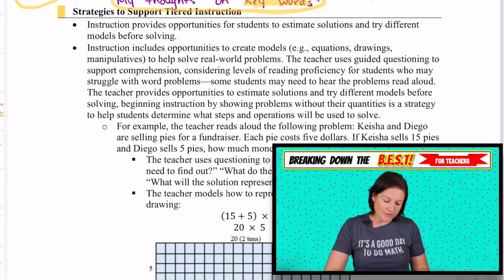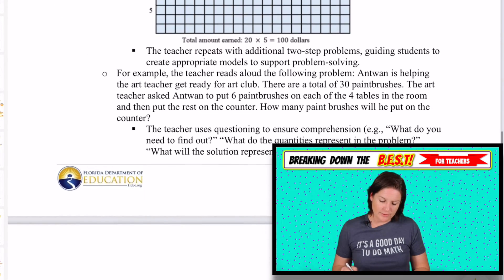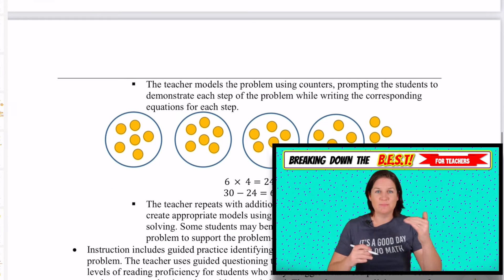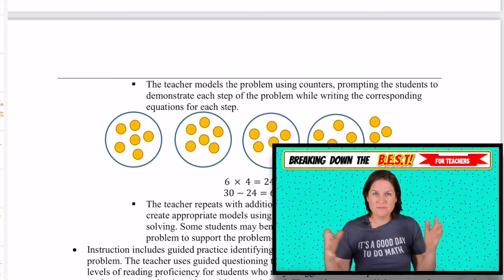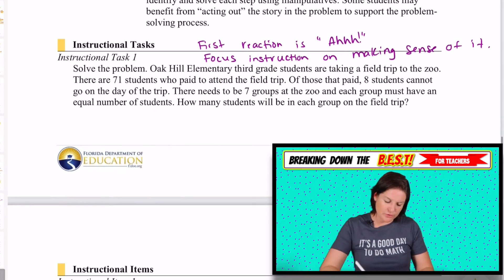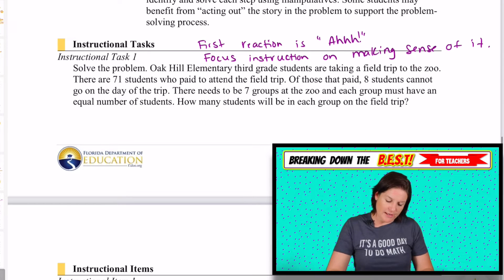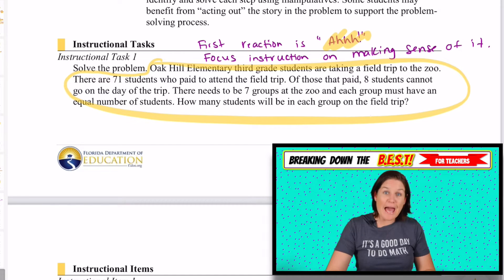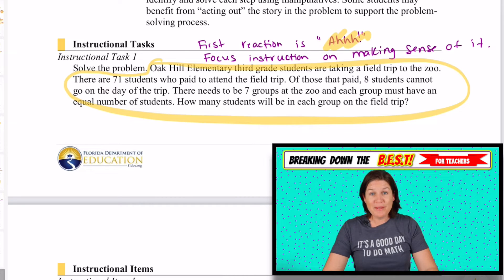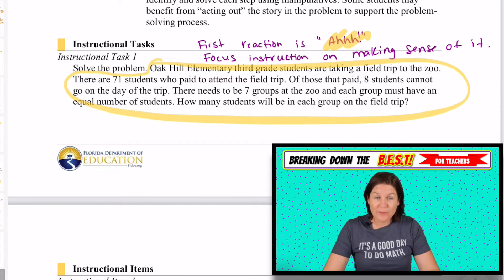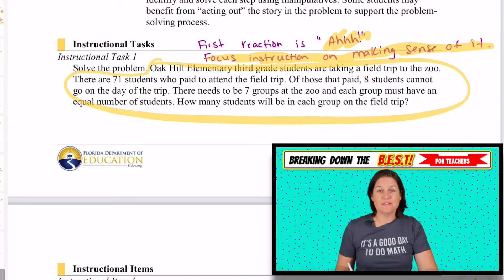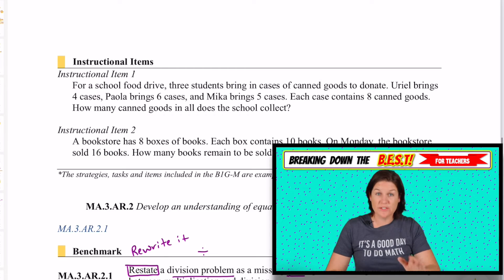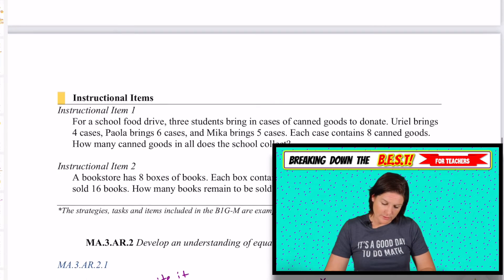I would definitely suggest taking a look at the new section the Department of Education has placed — the support for tiered instruction — to get a grasp of what you might need to do to give students extra building blocks. I'm going to scroll down to the instructional task. Just looking at this word problem, a third grader might be like, 'Ah!' — that's going to be their first reaction: oh my gosh, there's so many words. But if we have tools in place to make sense of it, it's really helpful for students.